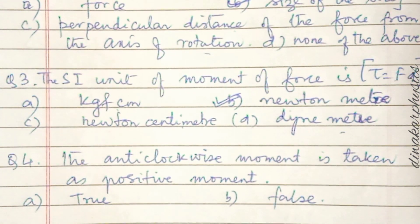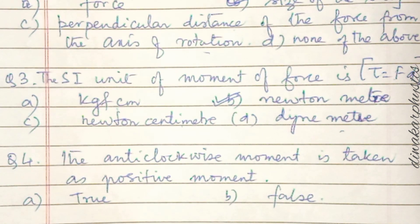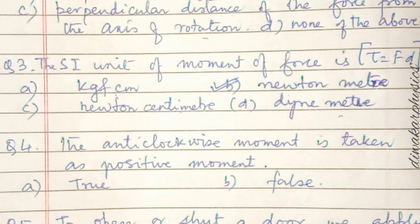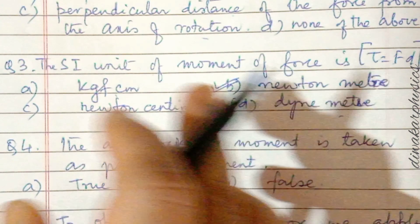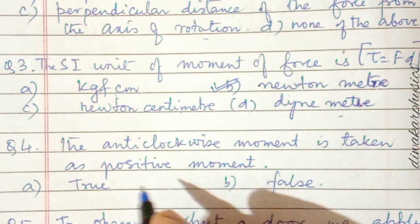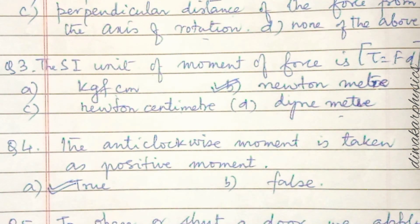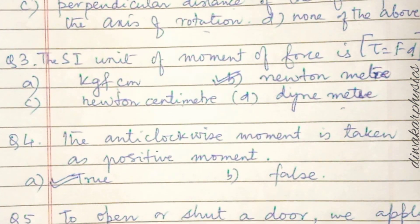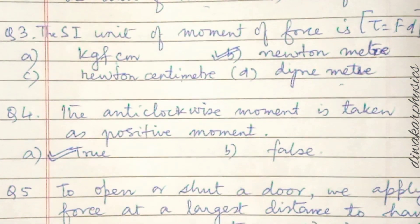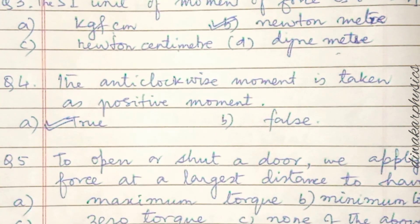Question four: the anticlockwise moment is taken as positive — true or false? When the body rotates in the anticlockwise direction, the moment is taken as positive, and clockwise moment is taken as negative. So this statement is true.